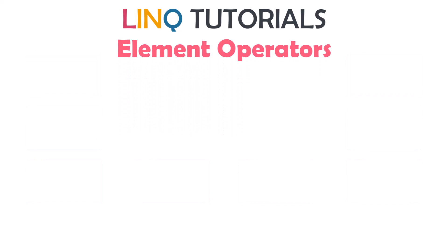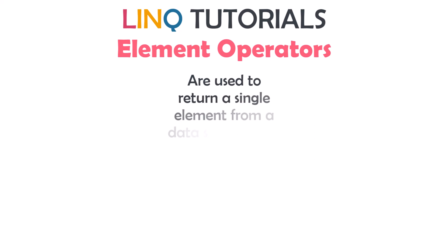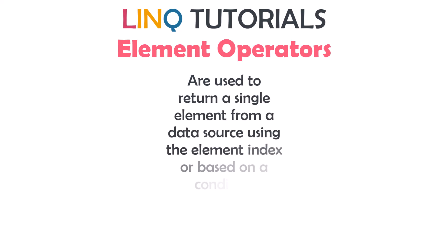Element operators in LINQ are used to return a single element from a data source using the element index, or based on a condition. In a LINQ query we have the following nine element operators.